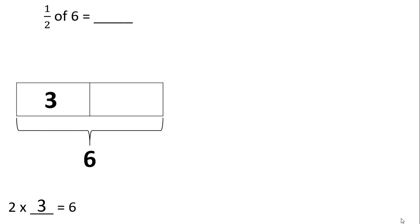So each part is going to be worth 3. Let's add 3 plus 3 and we can see that equals 6, which is the total worth of our tape diagram. So if we're trying to find half of 6, we're just going to be looking at one of these two parts. We can see that one of these two parts is worth 3. So half of 6 is 3.